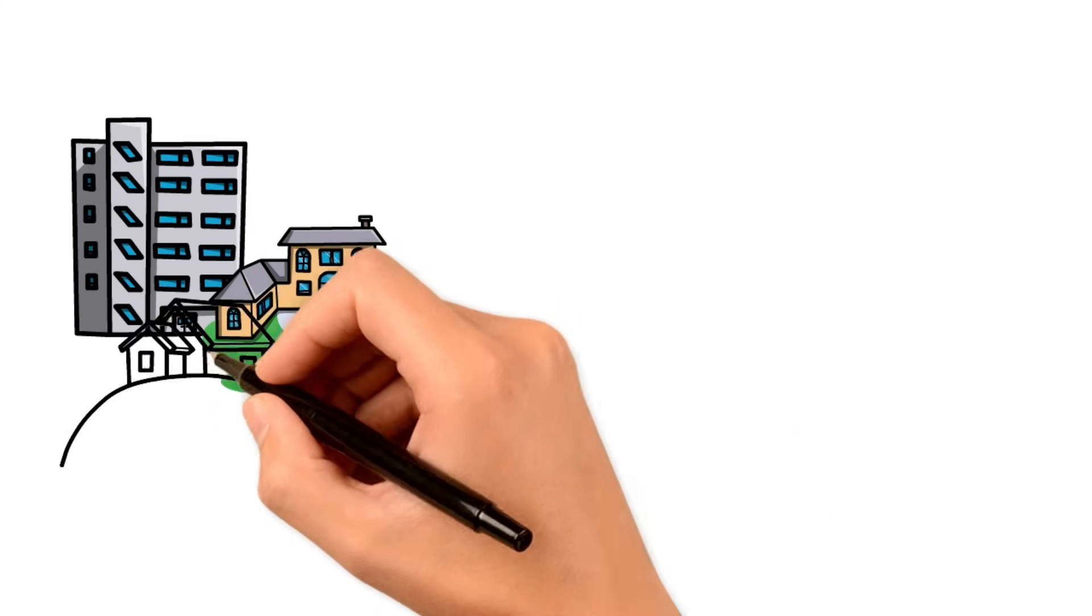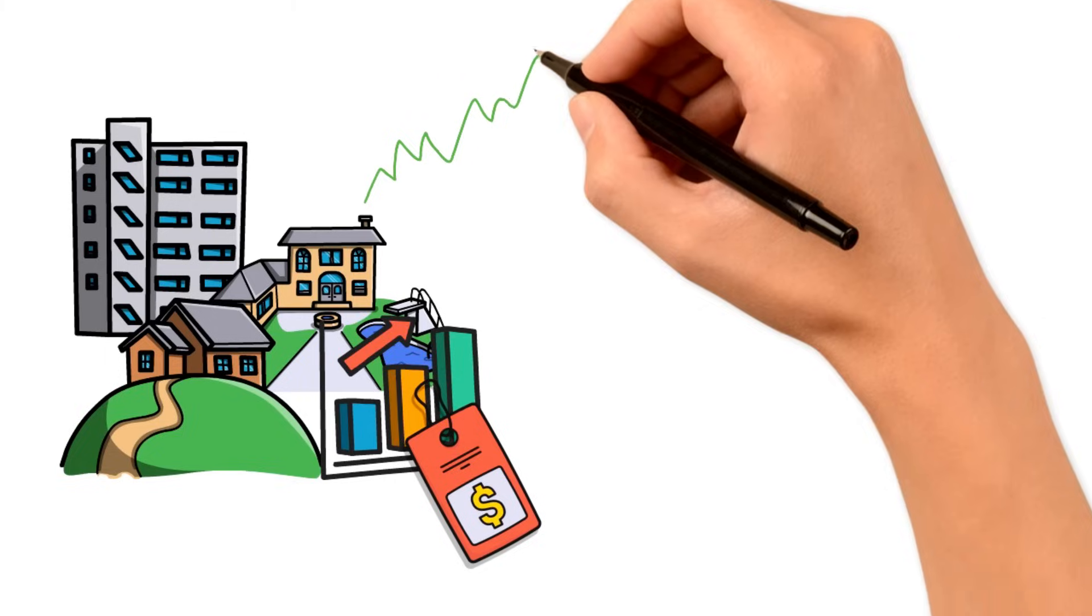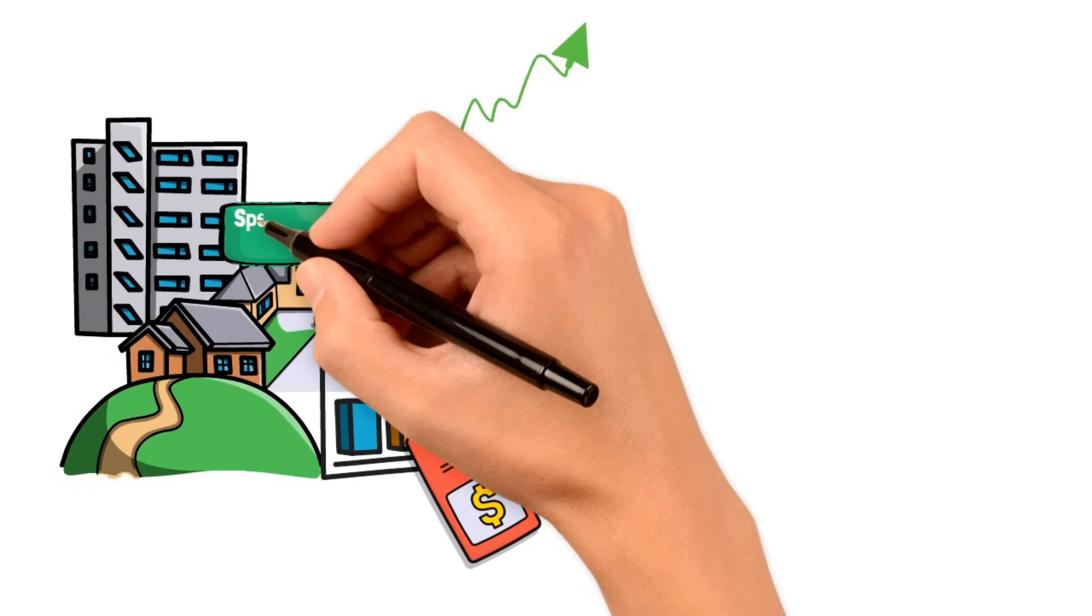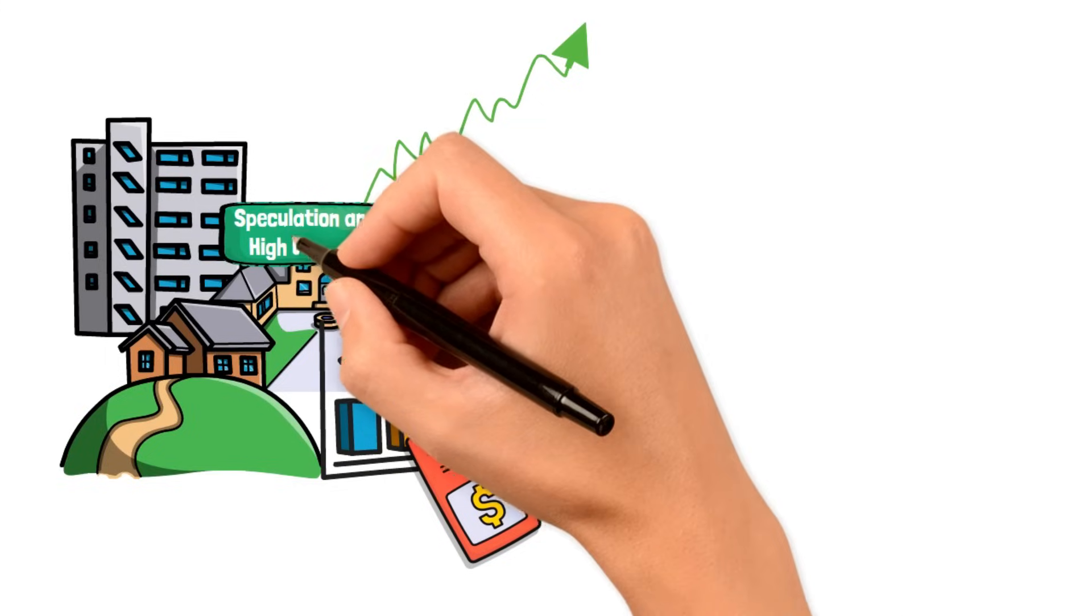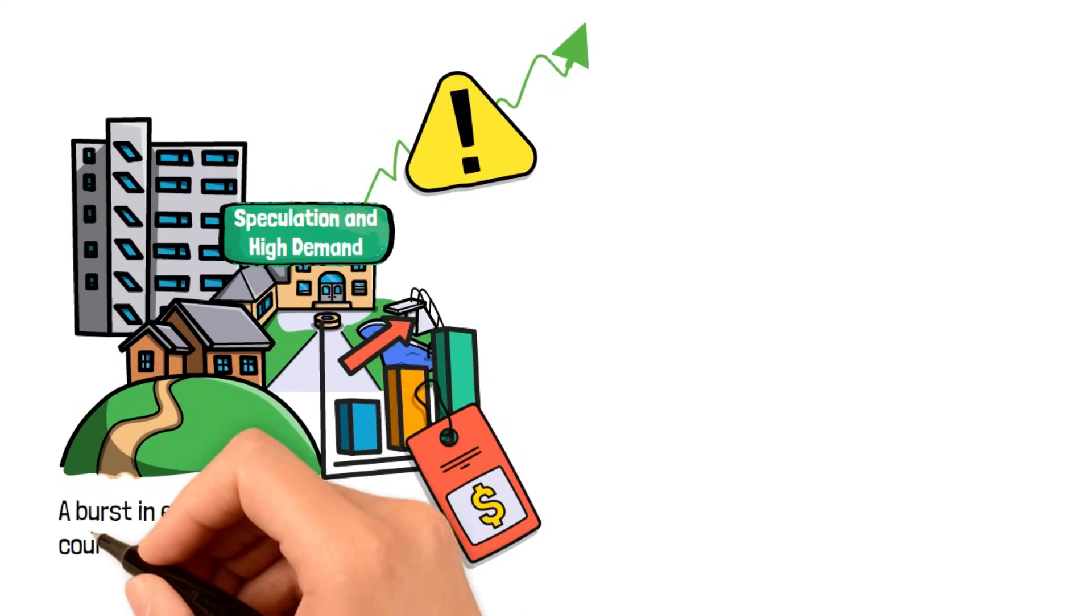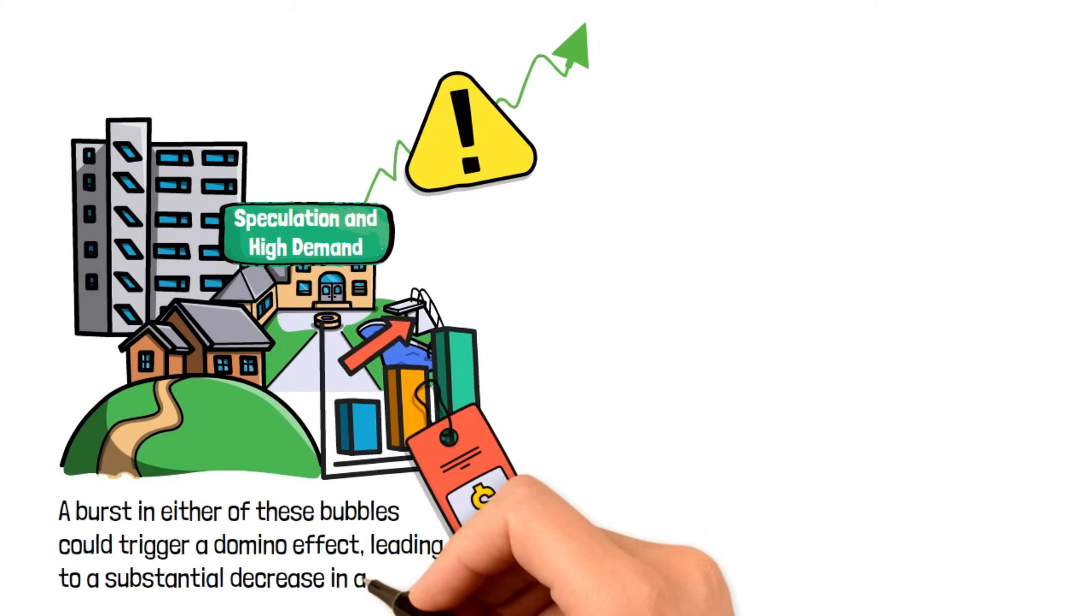Additionally, the danger of simultaneous housing and stock market bubbles is another factor that we definitely need to keep an eye on. When both markets experience excessive growth fueled by speculation and high demand, the risk of a significant decline increases. A burst of either of these bubbles could trigger a domino effect, leading to a substantial decrease in asset values and overall market instability.